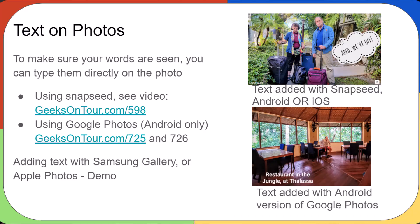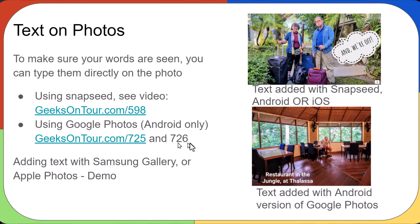The last option is typing text directly on the photo, so if they're looking at the photo they're going to see the text — there's no way around it. I use Snapseed for this first example, and to see how that's done there's a separate video, number 598. Also, using Google Photos — just the Android version — you can add text like this one on the bottom, and there are two separate videos on that, 725 and 726. In case you don't have Snapseed or Google Photos Android, I want to show you how you can do it on the Samsung Gallery or Apple Photos.